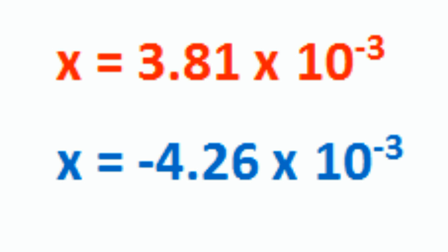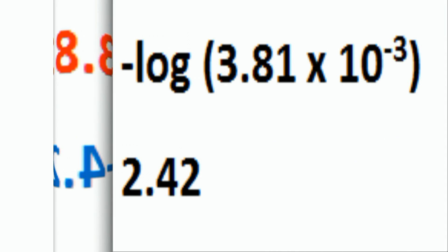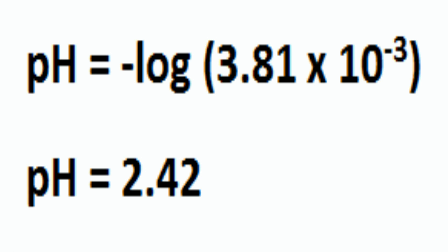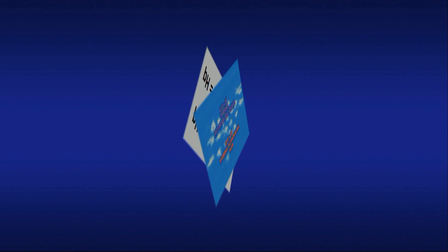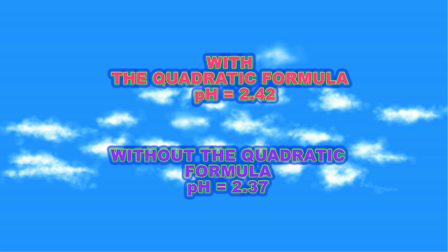When using the quadratic formula, two answers are generated. In this case, X equals 3.81 times 10 to the minus 3, and X equals negative 4.26 times 10 to the minus 3. Clearly, the concentration of an acid cannot be negative, so the correct value is 3.81 times 10 to the minus 3. Taking the negative log of 3.81 times 10 to the minus 3 generates a pH of 2.42, which is a more accurate value than 2.37.